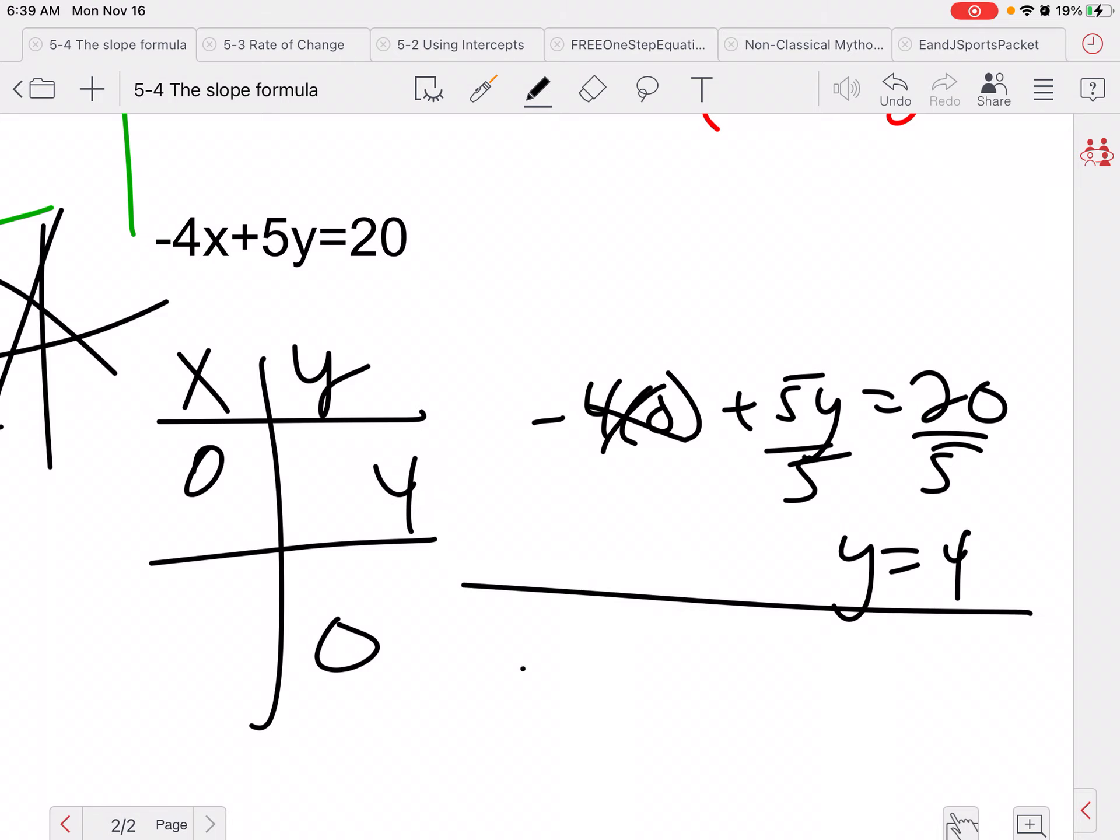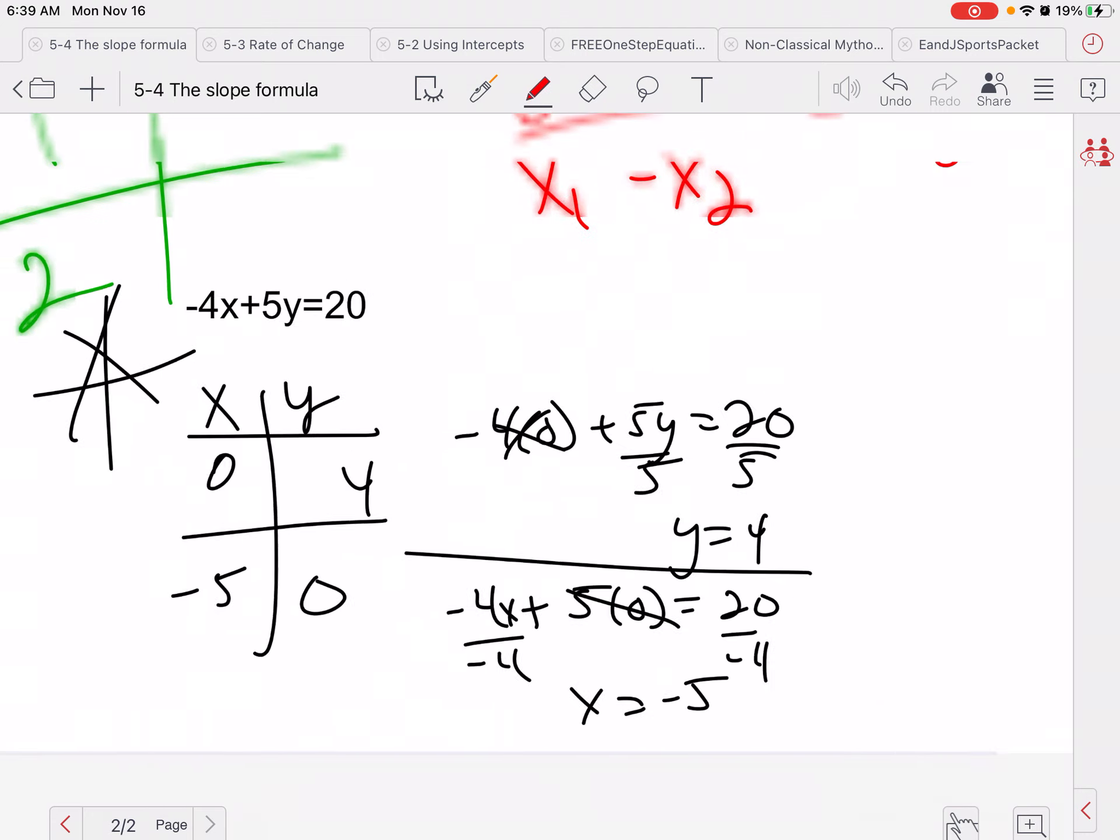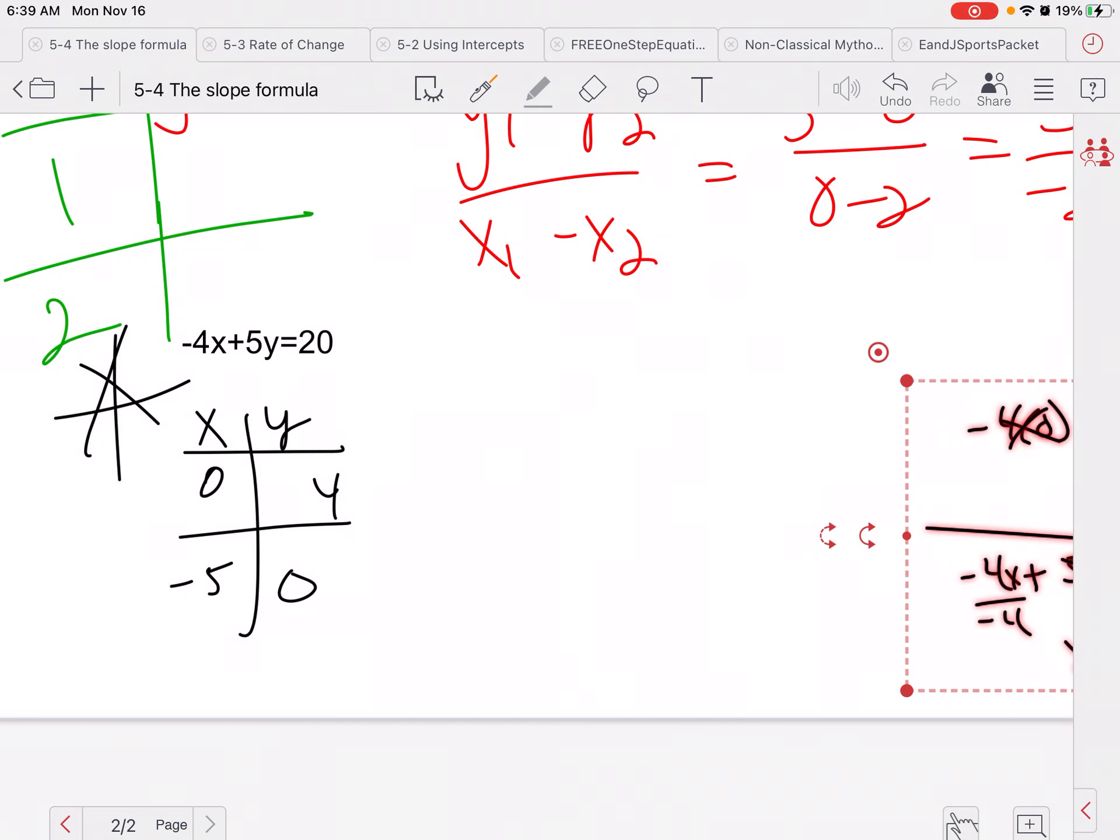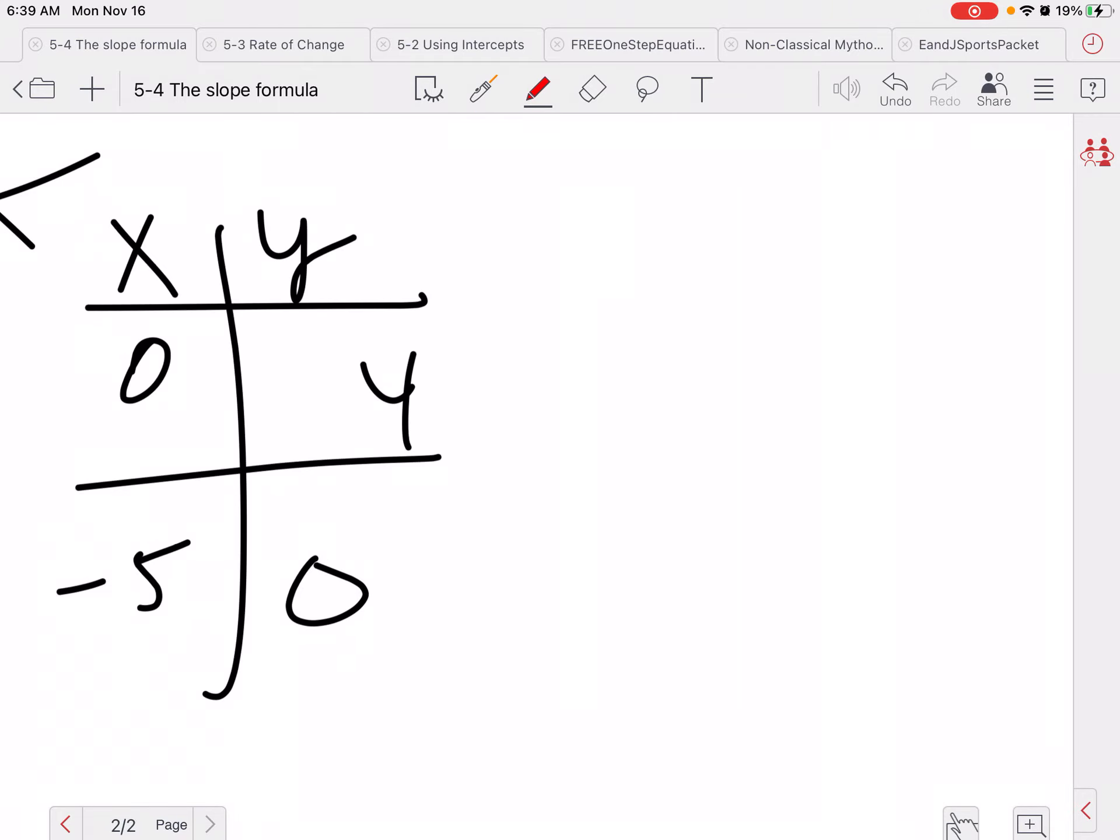And then we're going to go ahead and plug in 0 for y. Again, this goes away. So I'm going to divide by negative 4. So x equals negative 5. I'm going to just go ahead and move this out of my way. So I'm going to do my slope formula. So this is x1, y1, x2, y2.